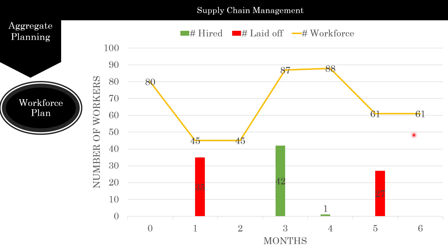Now remember, when you're calculating the cost of hiring and cost of laying off, if you don't calculate them properly, the computer is going to think that it's really cheap. So here it is $50, but maybe you haven't calculated the cost of training these new people who are hired — these 42 new people — to be as productive. So you have to be very careful when you're calculating the cost of hiring and laying off.